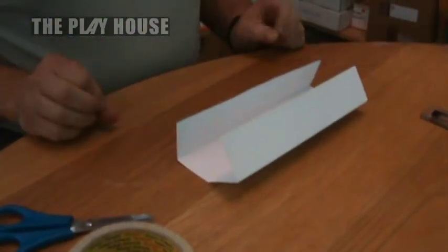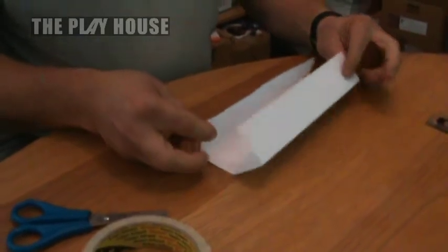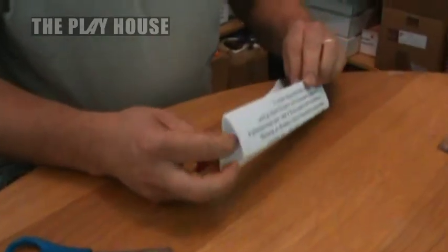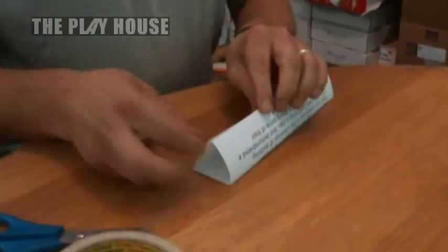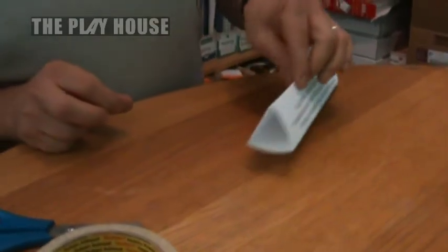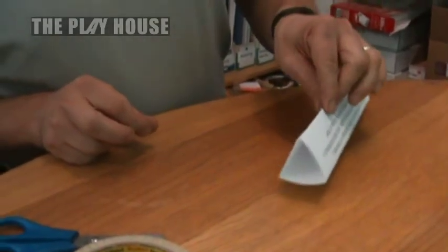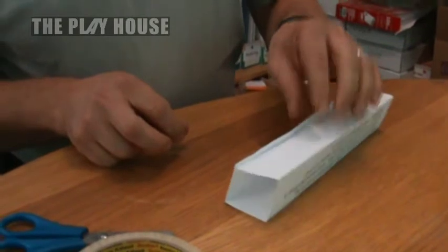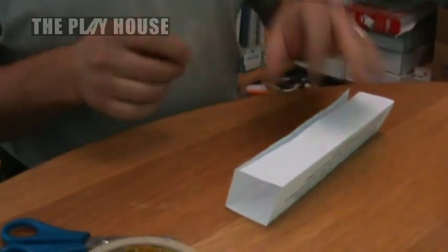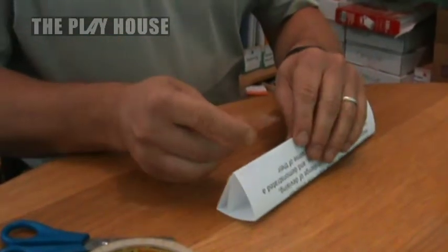Then we're going to take it and turn it into a triangular prism by tucking one edge inside like that. And use some tape to stick it and hold it in place.